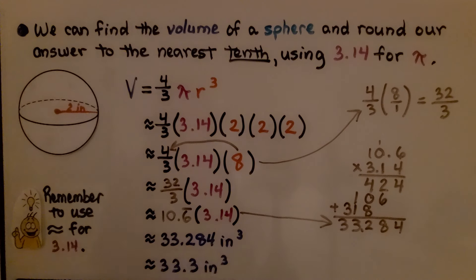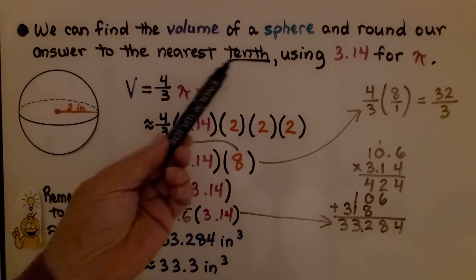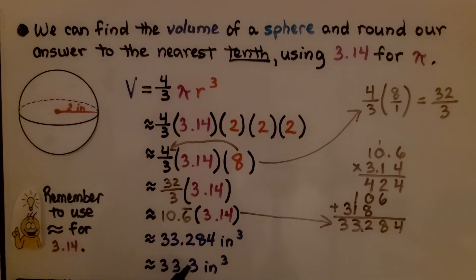It's in inches, we have inches cubed, and we're rounding it to the nearest tenth so we have 33.3. The 8 makes the 2 go up to 3 and then they drop off.